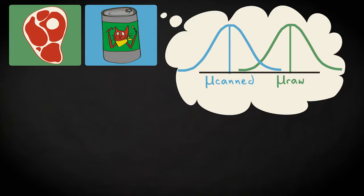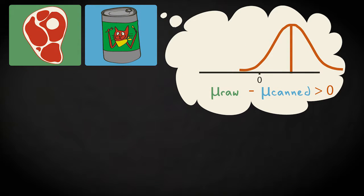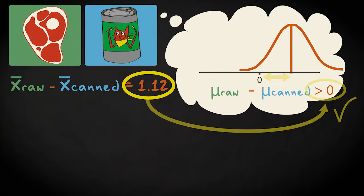I expect the mean of the raw group minus the mean of the canned group to be larger than zero if raw meat truly results in better health. Suppose I find a sample difference between group means of 1.12. This difference looks pretty big, so why can't we just infer there's a real effect of diet in the population?